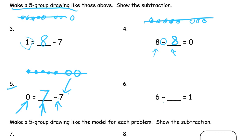Now here we have the subtraction symbol. We know we start with 6 before we subtract: 1, 2, 3, 4, 5, 6. We don't know how many are crossed out, but we know that there's going to be 1 left after we're done. So let's cross them all out except for 1. How many did we subtract — how many did we cross out? We crossed out 5. That's how you figure these out.